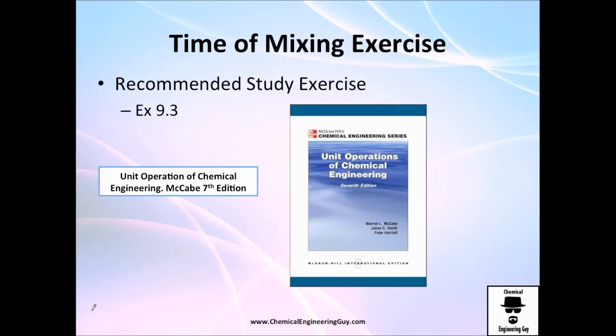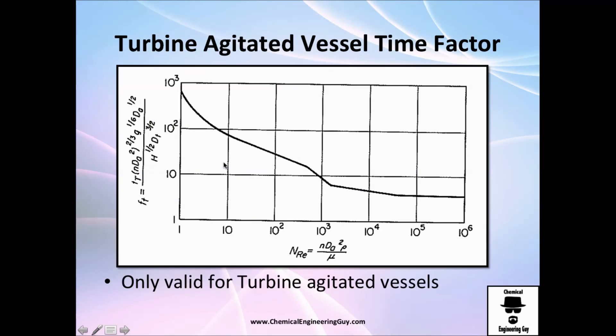So guys, if you want to try another exercise, I would definitely recommend you exercise number three from Chapter number nine from the Unit Operations of Chemical Engineering, written by McCabe, Smith, and Harriet. It's about how much time it takes for different types of impellers such as propeller, turbine, and so on. And it's nice because you get to use these graphs right here: calculate Reynolds number, with Reynolds number go back and calculate the time and so on. It's definitely worth it.